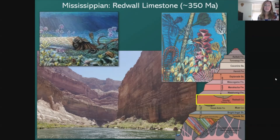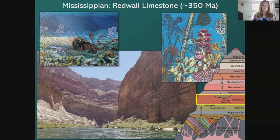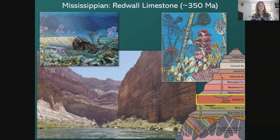Now we're going to jump into the Redwall Limestone — moving up through geologic time from about 500 million years to now 350 million years. The Redwall makes up most of Marble Canyon and often forms a major cliff that appears red, but the rock itself is actually gray — the red appearance comes from iron oxidation, similar to a rusty nail. The Redwall Limestone also represents a vast ocean, only this one was slightly deeper with different kinds of creatures.